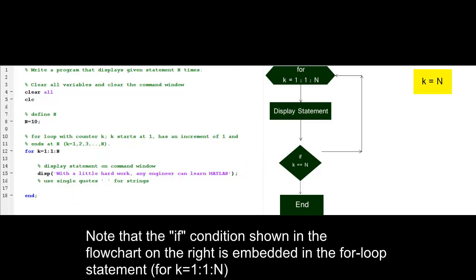Note that the if condition shown in the flowchart on the right is embedded in the for loop statement, k equals 1 colon 1 colon n.